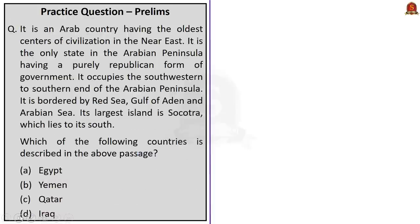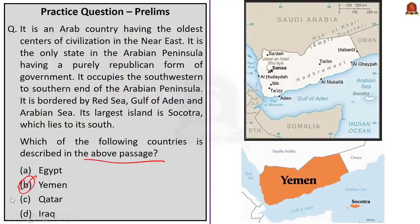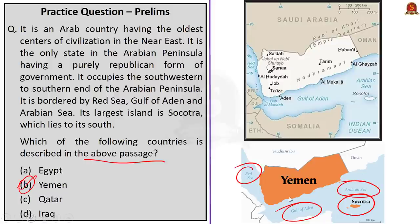Next question: It is an Arab country with the oldest centers of civilization in the Near East, the only state in the Arabian Peninsula with a purely republican form of government. It occupies the southwestern to southern end of the Arabian Peninsula and is bordered by the Red Sea, Gulf of Aden, and Arabian Sea. Its largest island is Socotra, which lies to its south. The correct answer is option B — Yemen. Yemen is bordered by Saudi Arabia in the north and Oman in the east.